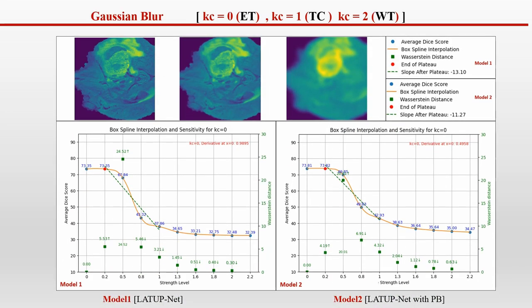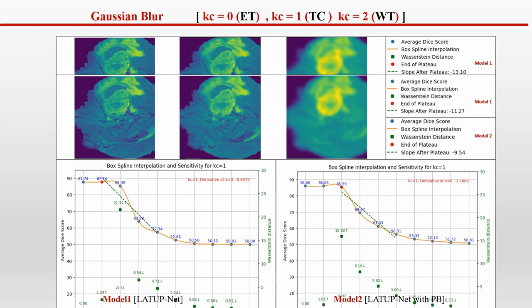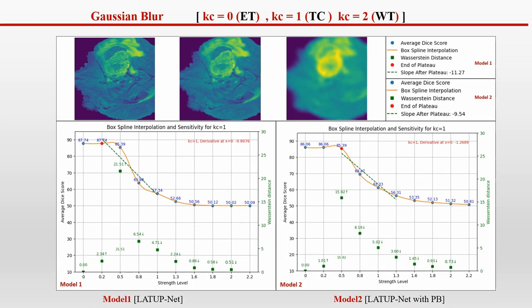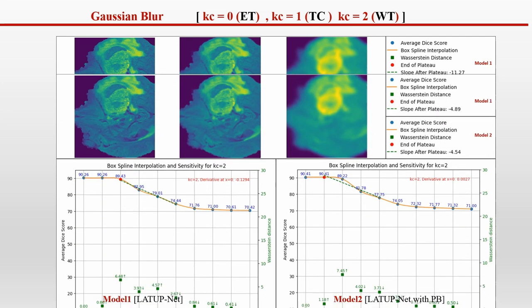While a similar robustness plateau is also observed for Gaussian blur, the probabilistic bottleneck advantage is more pronounced here. Model 2 outperformed model 1 at lower levels of blur, and this is consistent across all tumor regions.